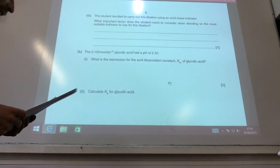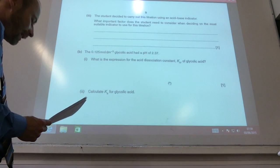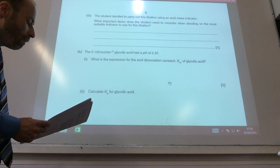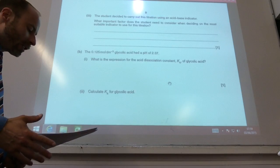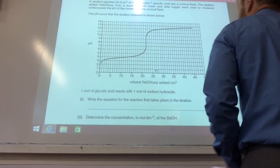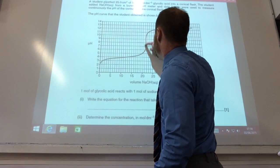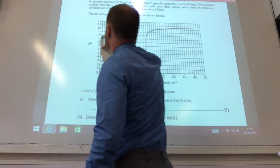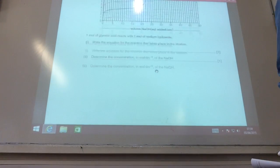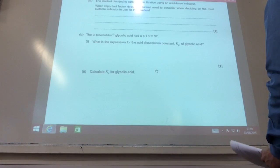So it carries on. So if the student decided to carry out this titration using an acid-base indicator, what important factor do we need to consider? The vertical section must match the pH range of the indicator. So if we whiz back to that, the pH range of the indicator must match the vertical section of the graph.